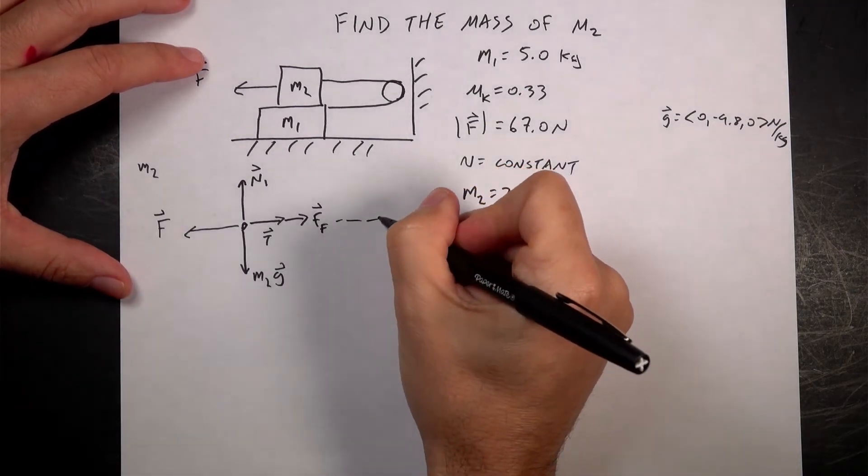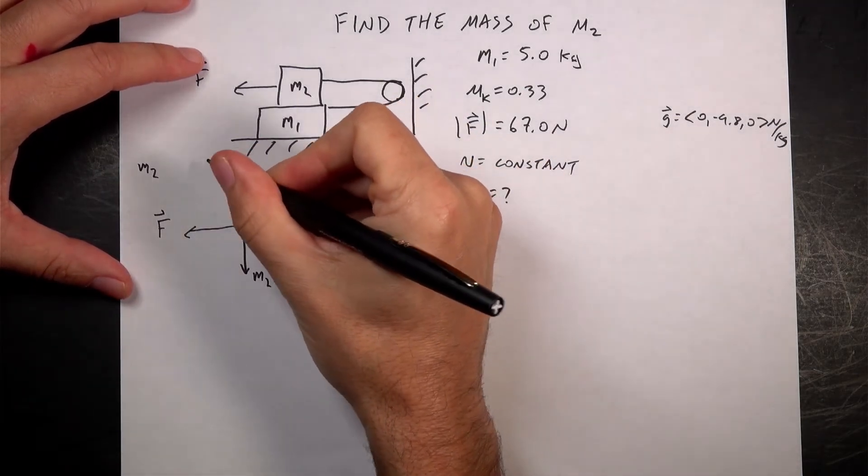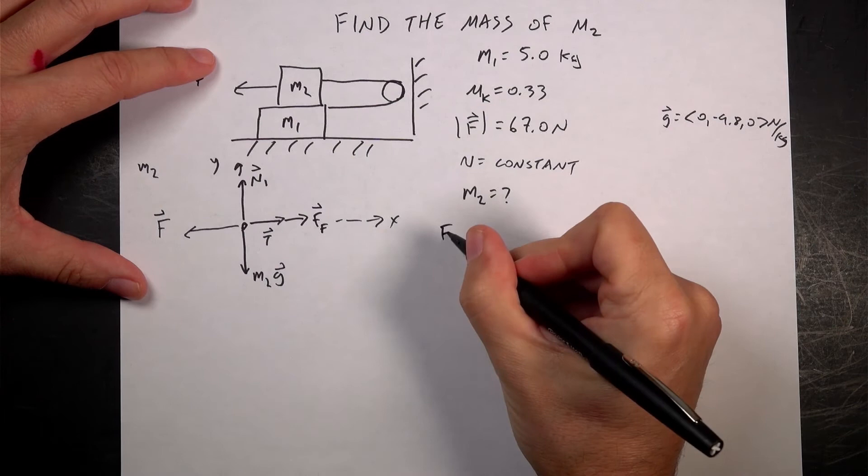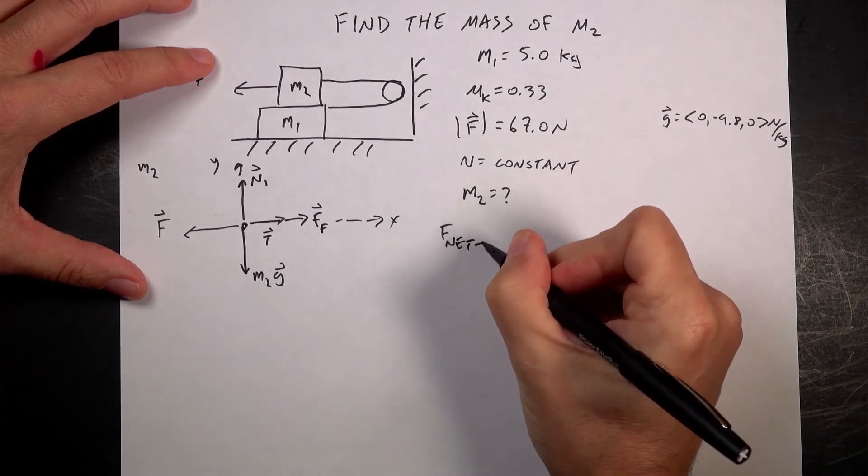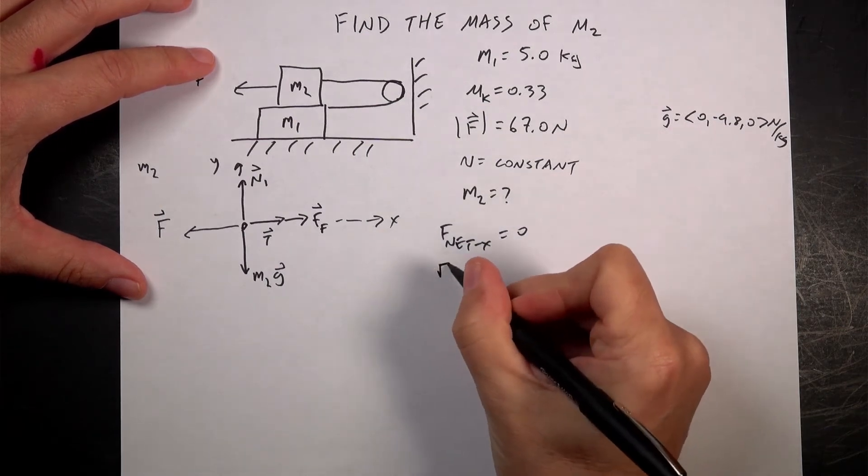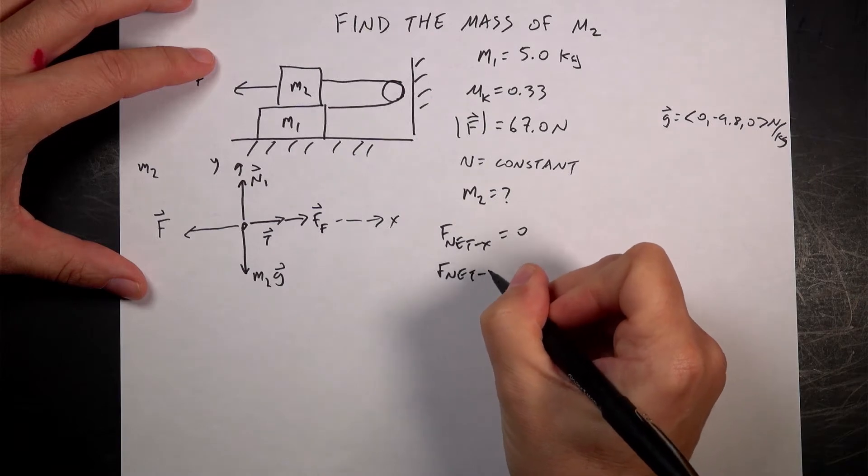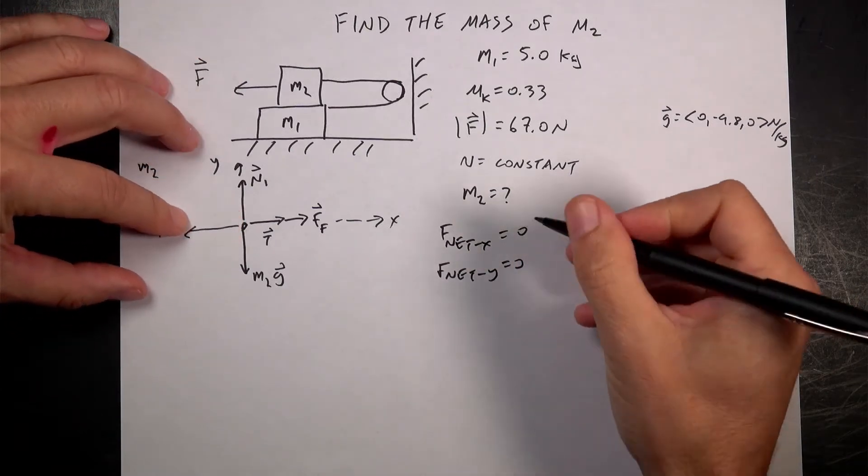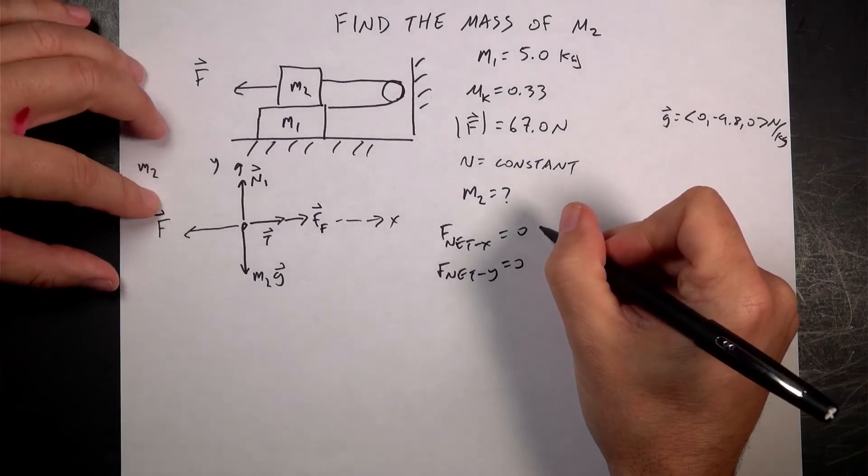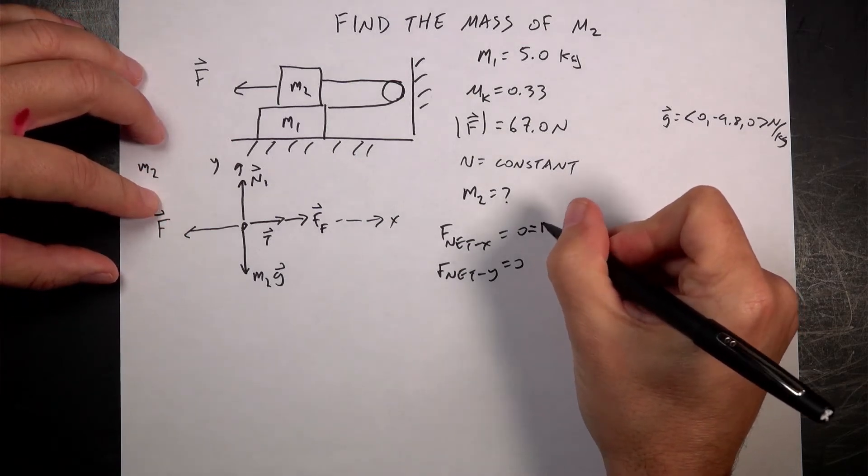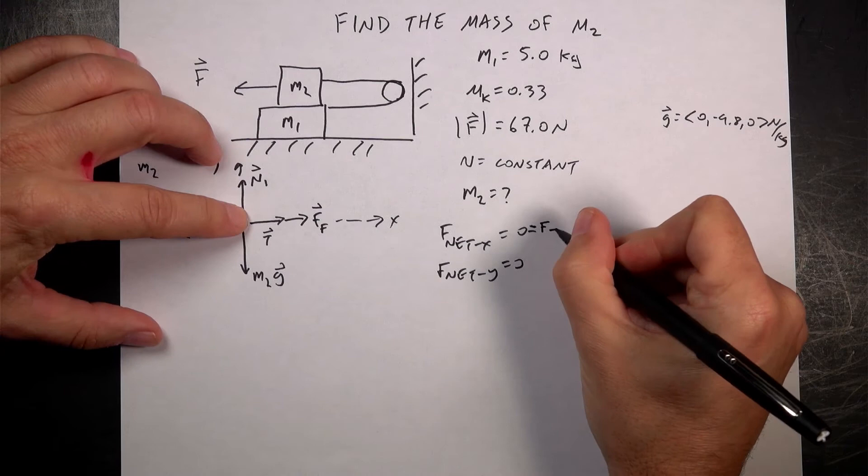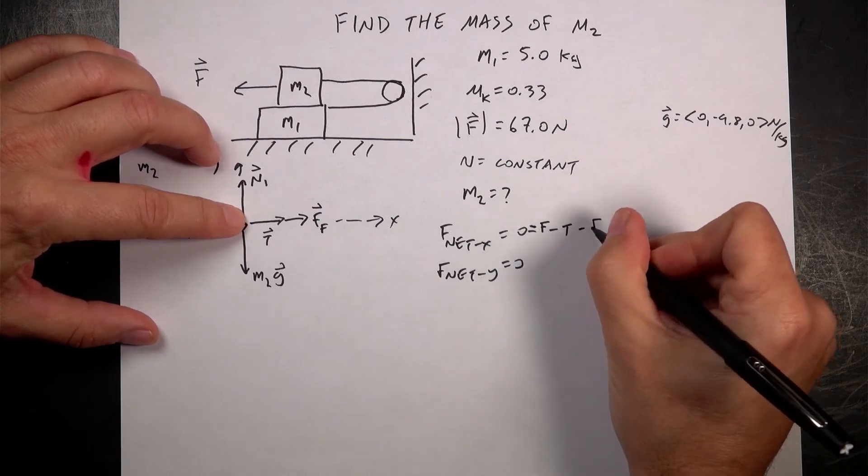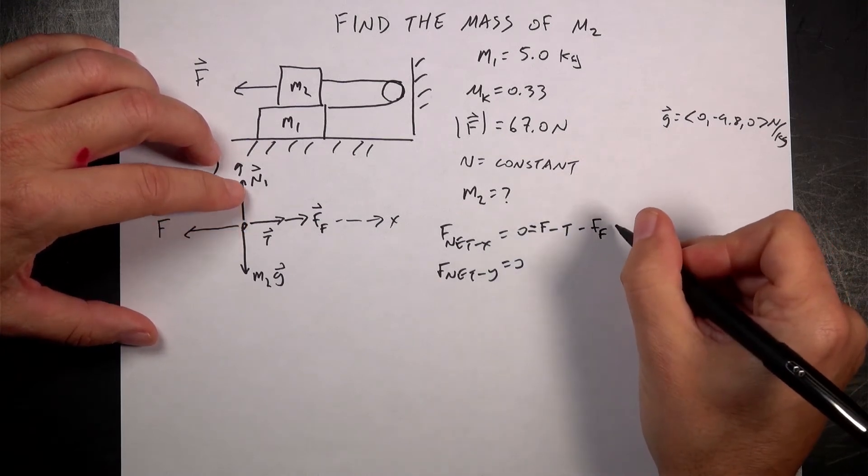So let's call this the X direction and this the Y direction. I'm going to say F net X equals zero, F net Y equals zero. So what are the net forces in the X direction? I have F, which I know, and then I have minus T minus the friction force. And that's going to be equal to zero.